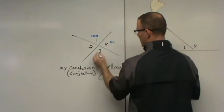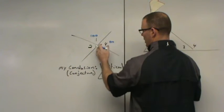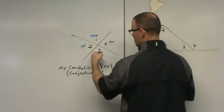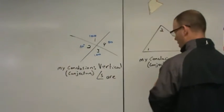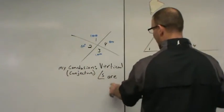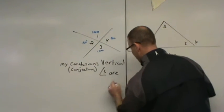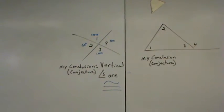And we just kind of continued that around the circle. If 4 is 80, 3 has to be 100 because 3 and 4 form a straight line. If 3 is 100, 2 has to be 80 because 2 and 3 form a straight line and it just kind of continues full circle. So our conclusion there, or conjecture, conjecture conclusion, same thing. Vertical angles are, and we're going to use that equal with the squiggly above it, vertical angles are congruent.